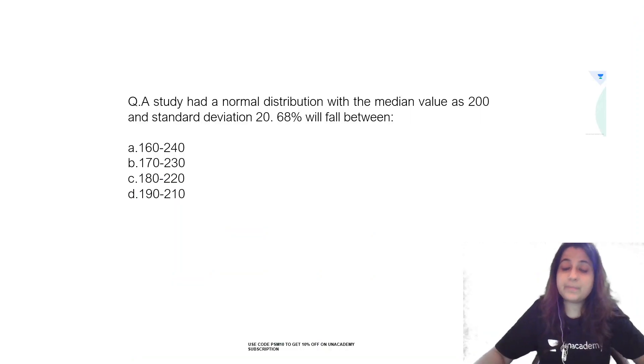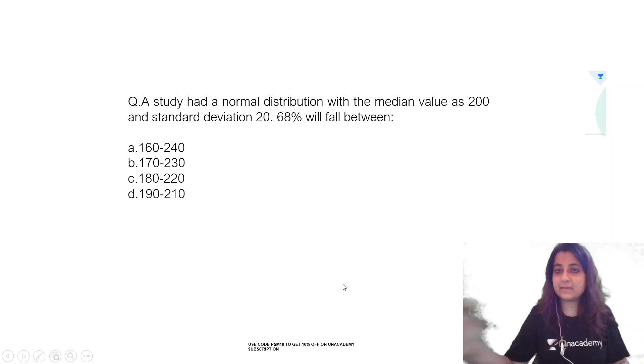Okay, so the question which was a PYQ was: a study had a normal distribution with the median value as 200 and standard deviation of 20. 68% observations will fall between. So that was the MCQ.